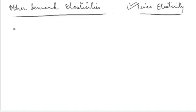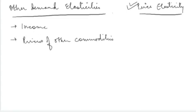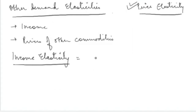Quantity demanded gets affected by several other factors as well. We have studied factors such as income and prices of other commodities. These other commodities could be either complementary goods or substitute goods. Today we will be specifically talking about elasticities with respect to these factors, starting with income elasticity.